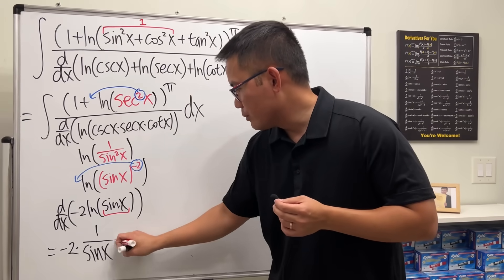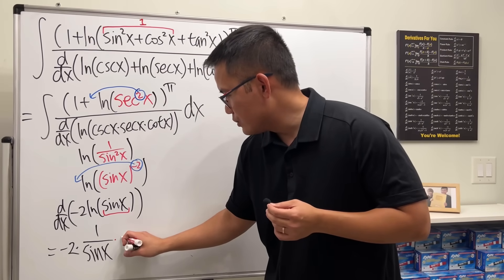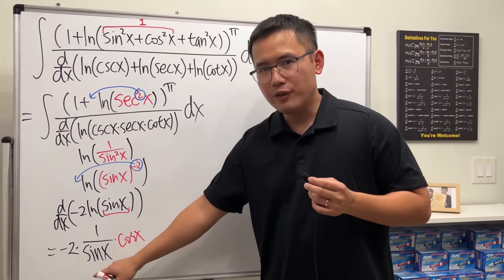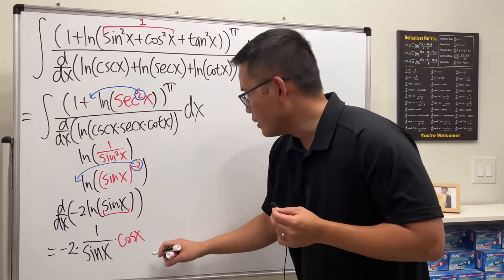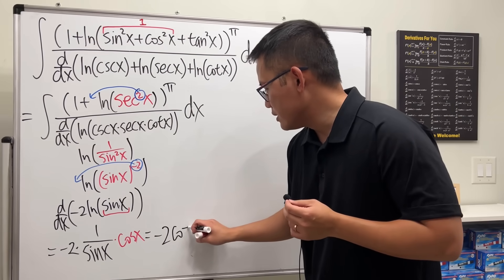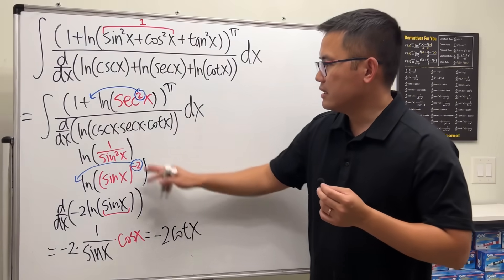Cosine x over sine is cotangent, so all in all, on the bottom, we really just have negative 2 cotangent x. And keep in mind, this is on the bottom.